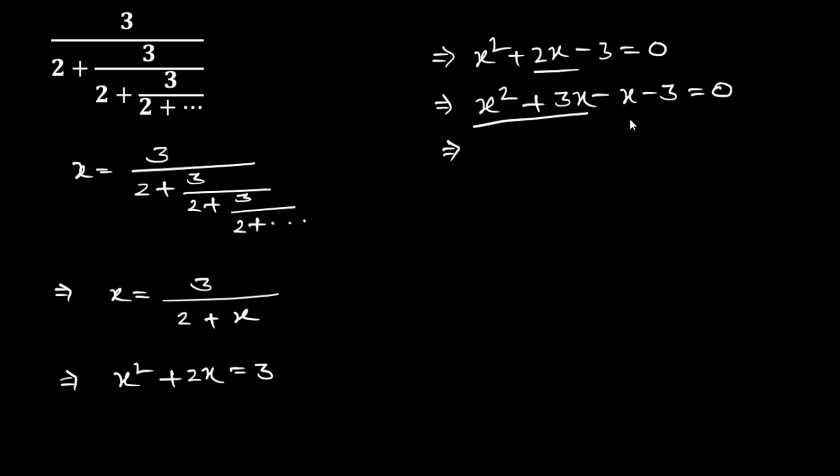Now take X plus 3 common from these two terms, so we get X plus 3 times X minus 1 is equal to 0.